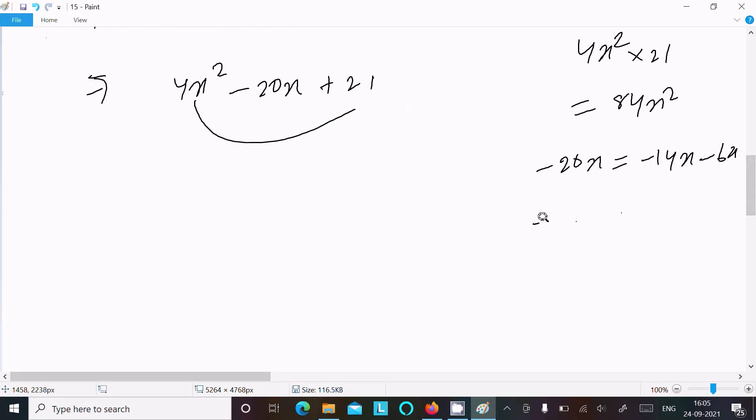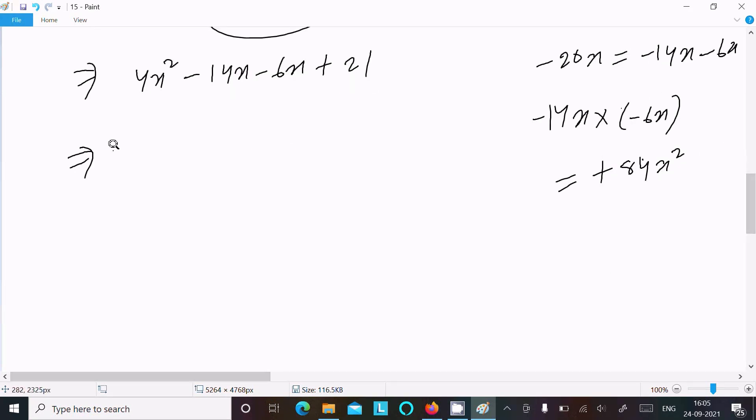If I multiply -14x × -6x, minus times minus is plus, 6×14 is 84, so 84x². Now here we can write 4x² - 14x - 6x + 21.